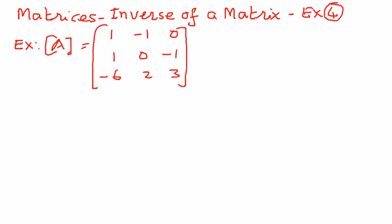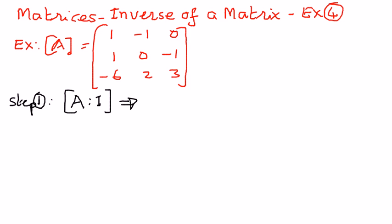According to the Gauss-Jordan elimination method, if A is a matrix and if we want to find the inverse of that, we're going to partition it with an identity matrix. Then by performing the row operations, the identity matrix is going to come on to the left-hand side of the partition, and the matrix which we arrive on the right-hand side will be the inverse of that matrix. This is the underlying principle behind the Gauss-Jordan elimination method, and we'll apply that concept to this problem here.